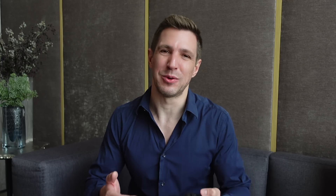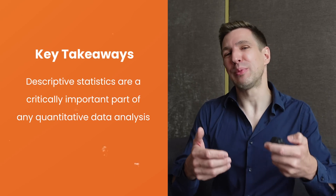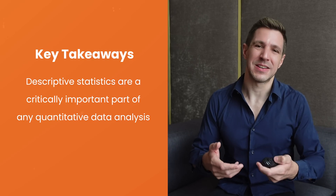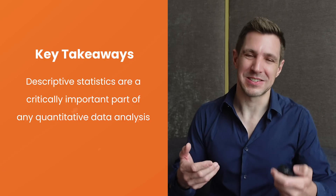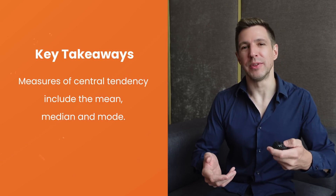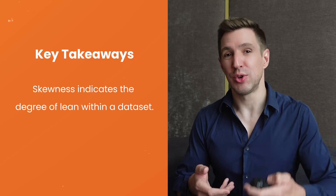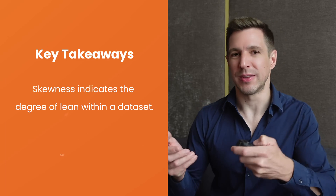We've covered quite a lot of ground in this video, so let's quickly recap the key takeaways. Firstly, descriptive statistics, although relatively simple, are an essential part of any quantitative data analysis — so don't skip over them in favor of the more exciting statistics. We looked at measures of central tendency, which include the mean — that's the average — the median, and the mode. We also looked at skewness, which indicates whether a dataset leans to one side or the other.